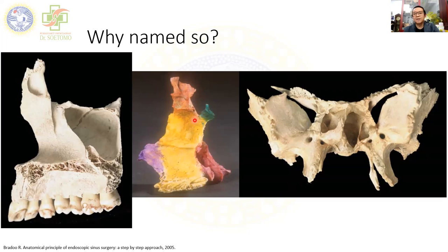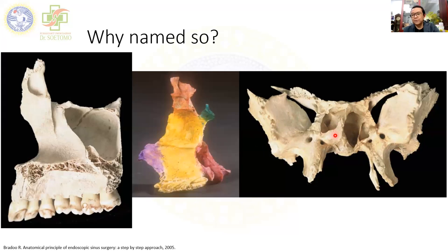There is a notch at the top of the vertical portion of the palatine bone — we call it the sphenopalatine foramen or sphenopalatine notch. If you want to find the sphenopalatine artery, find it at the level of the basal lamella of the middle turbinate attachment at the posterior end, or just above that level — not too far below.